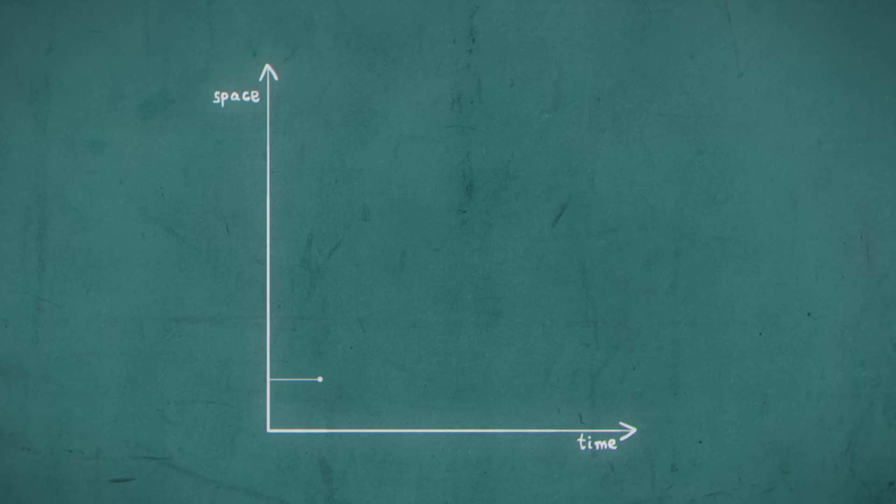However, traveling through one of these vectors limits the speed at which we can travel through the other. To picture this, imagine moving north at a fixed speed.